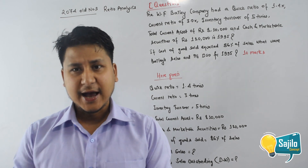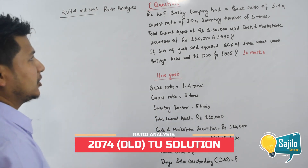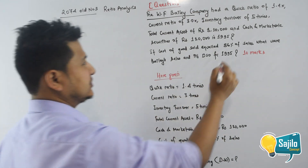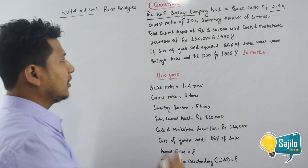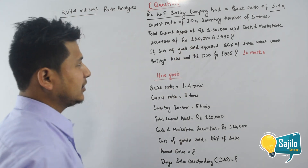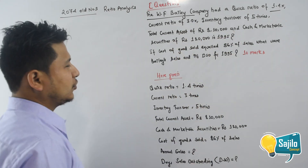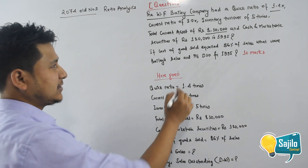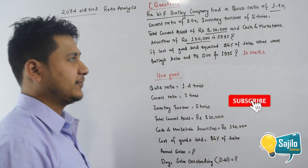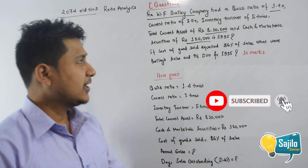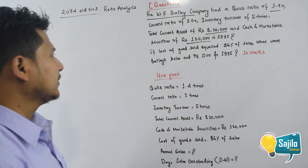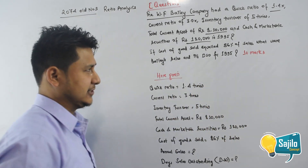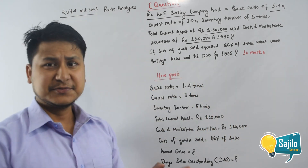In this question, we have W.F. Belly Company. The given information is: Quick ratio is 1.4 times, Current ratio is 3 times, Inventory turnover ratio is 5 times, Total current assets is 8,10,000, Cash and marketable securities is 1,20,000. Cost of goods sold is equal to 86% of sales.